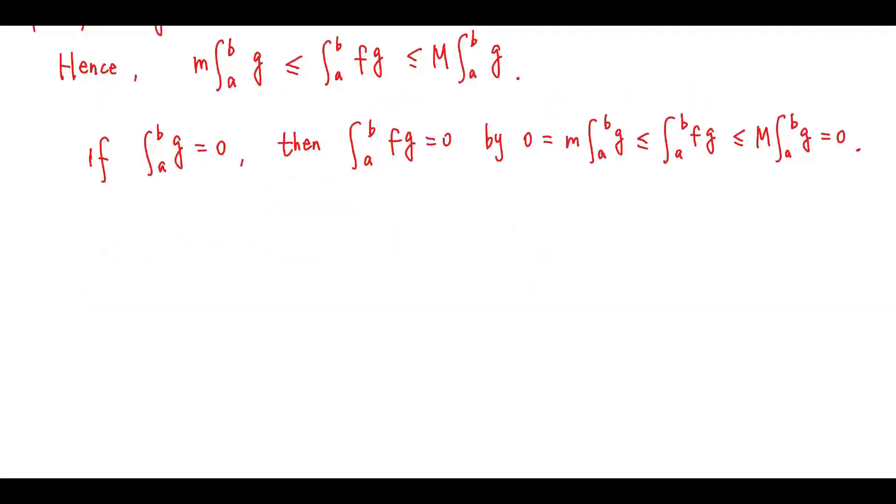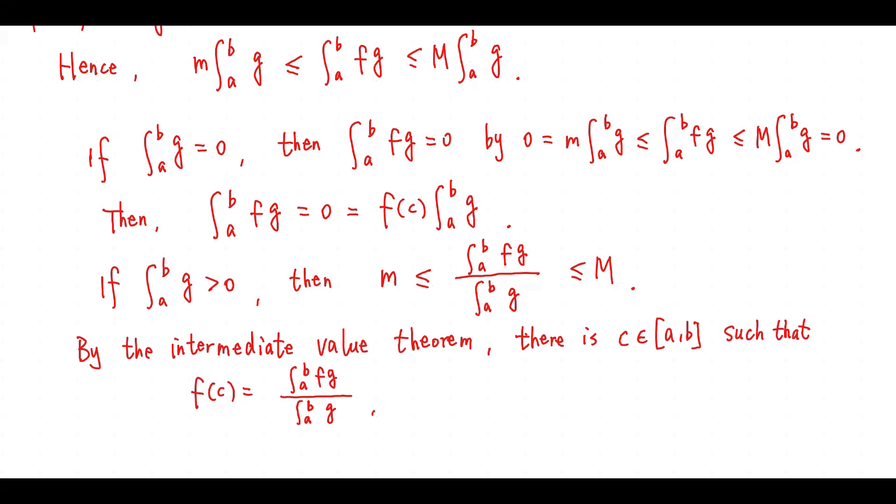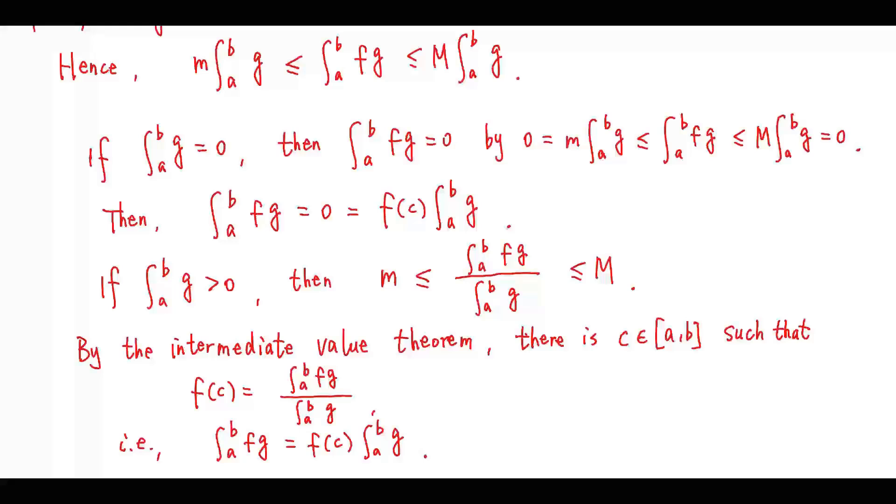If the integral of g is greater than zero, then we have this inequality. By the intermediate value theorem, there is a c in [a, b] such that f(c) equals the integral of f·g divided by the integral of g. This gives the desired result.